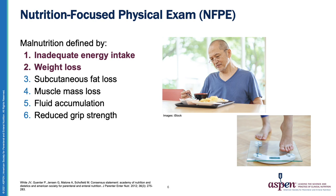It is recommended that all the data available for energy intake and weight loss, including any information available from previous admissions or outpatient encounters, should be evaluated. Whereas energy intake and interpretation of weight loss can be evaluated via medical record review and or patient interview, the other four characteristics are best assessed by physical exam. Clinicians should document visible findings as able and use clinical judgment in assessing and documenting risk for malnutrition and limitations in data for continued monitoring.